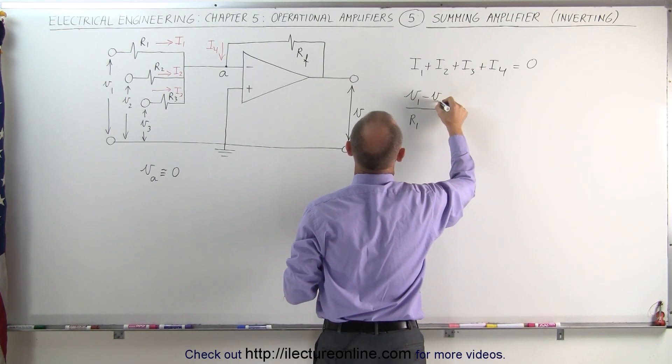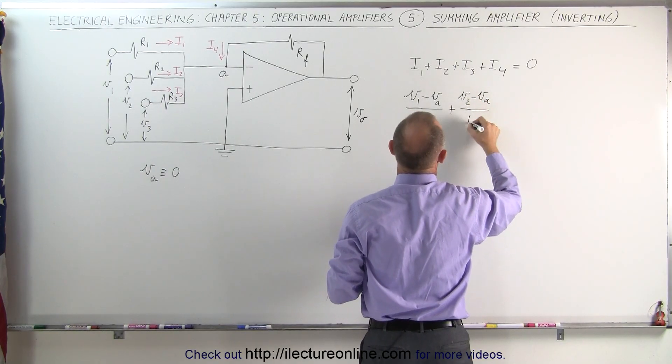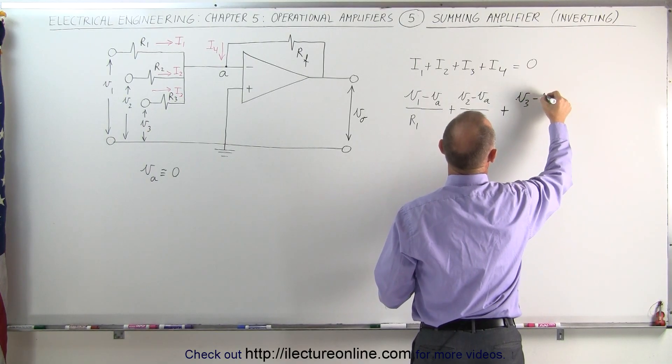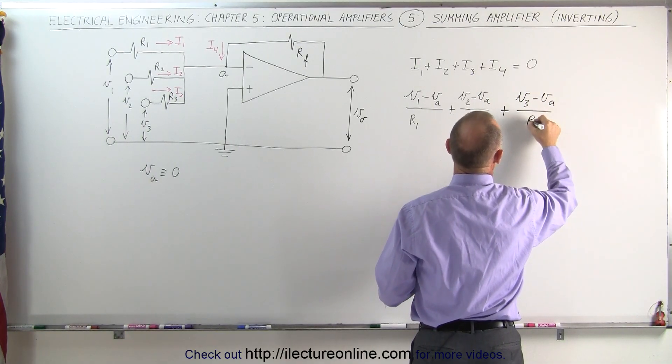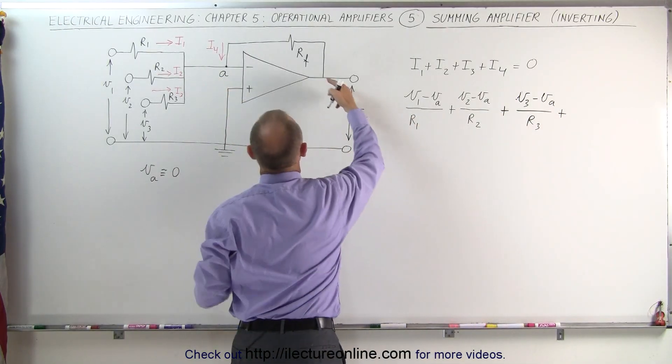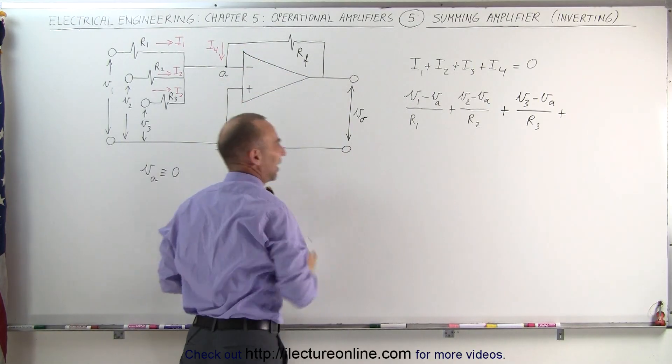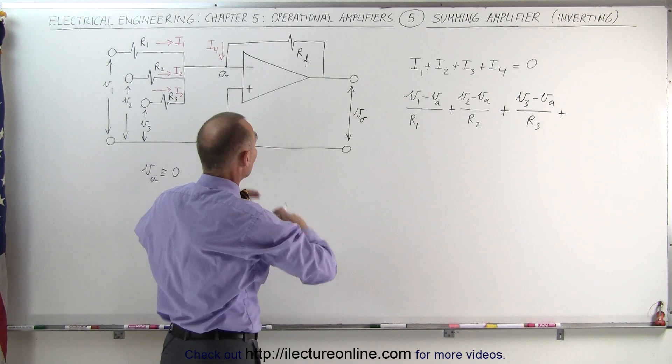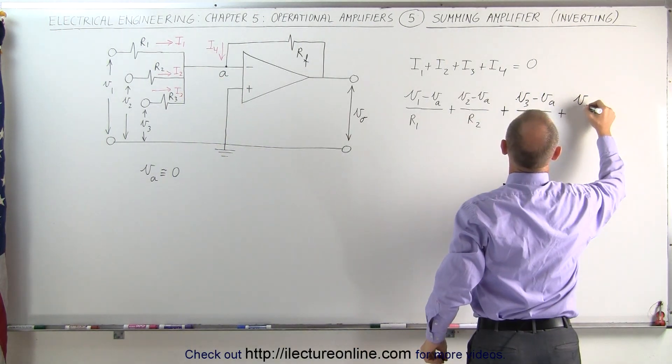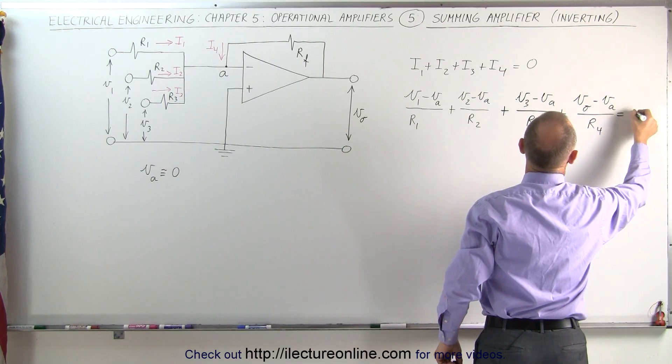So this would be V sub 1 minus V sub A plus V sub 2 minus V sub A over R2 plus V sub 3 minus V sub A over R sub 3 and then plus the current here. Now if we have drawn the current in this direction, that means that this must be at a higher potential than this. It probably isn't, but that's okay because it worked itself out. We're going to assume this direction, which means we're going to say V O minus V sub A divided by R sub 4 and that must add up to zero.